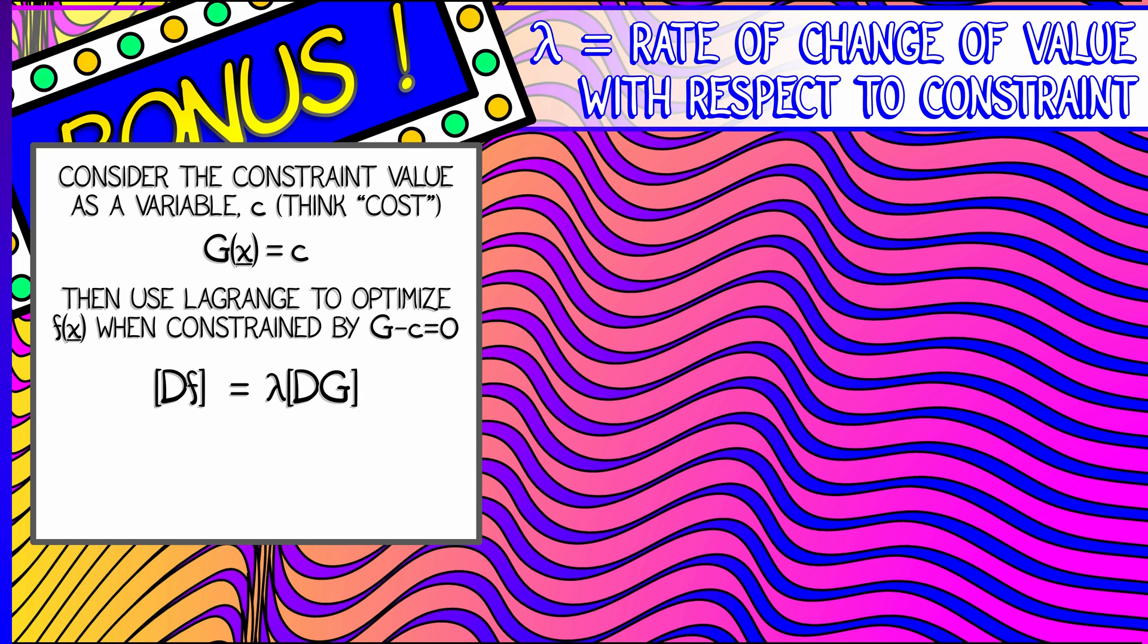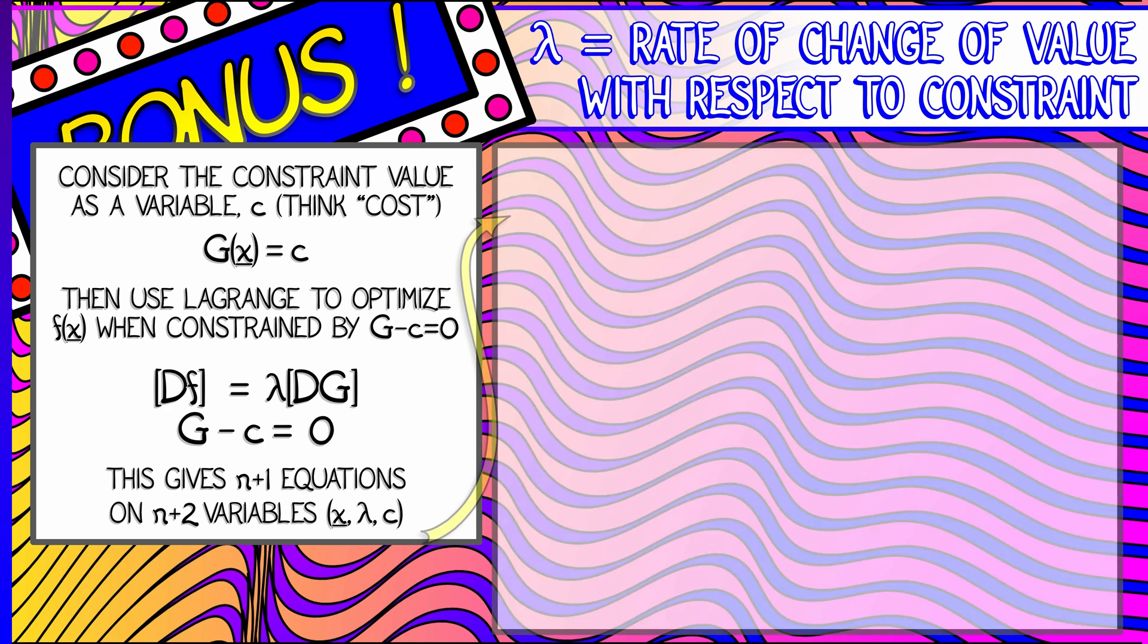That is, we're going to add c as a new variable. So Lagrange equations, df equals lambda times dg, and the constraint g minus c equals 0. There we go. But notice, we now have n plus 1 equations on n plus 2 variables. The variables being the x variables, n of them, the lambda variable, plus 1, and the c variable. That's n plus 2. Now here's the biggie.